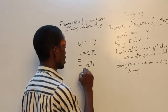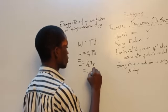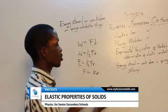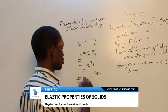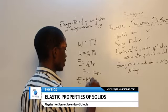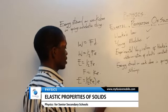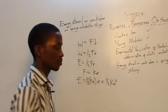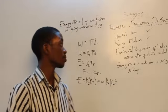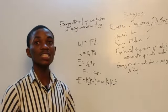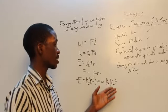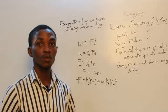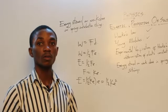Recalling that F equals Ke, and substituting into the energy equation, we have energy E equals half Ke multiplied by E, which gives us half Ke squared. So the energy stored inside a spring can be calculated as half Ke squared, or equivalently half Fe. The same formula applies to work done by a spring.